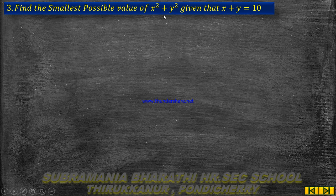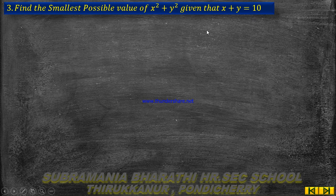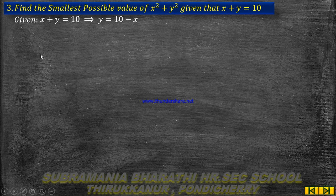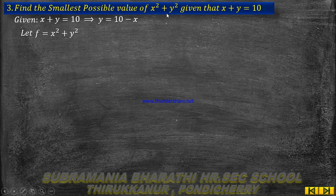So, how do we do that? Our function is x squared plus y squared, and we want the smallest value given that x plus y equals 10. First, from x plus y equals 10, we find y. So y equals 10 minus x. That's our constraint. Now define f equals x squared plus y squared.